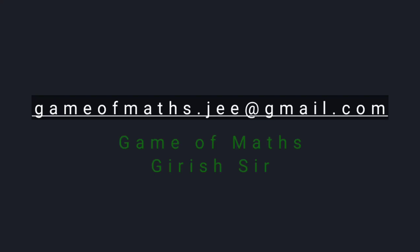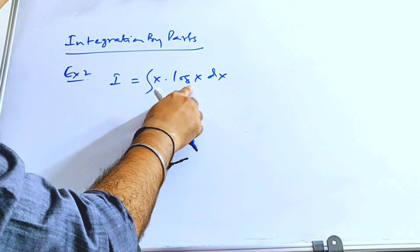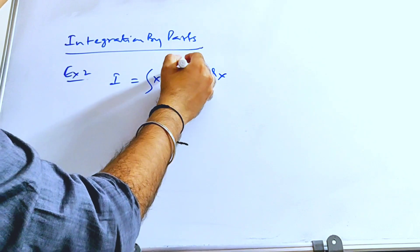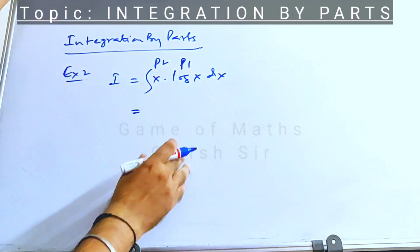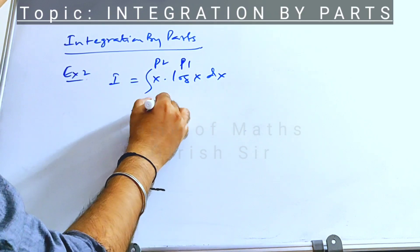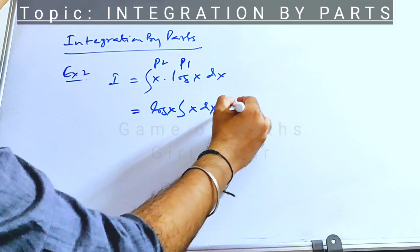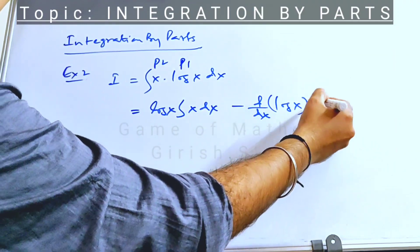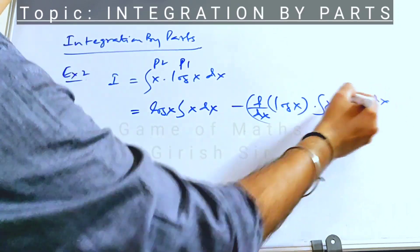Let's see another example. Here we have an algebraic function and a logarithmic function multiplied together, so we preferably select the log function as P1 and the algebraic part as P2. Using the formula, we take part one out of the integral, integrate part two, then subtract the derivative of part one times the integral of part two — and that product is integrated again.